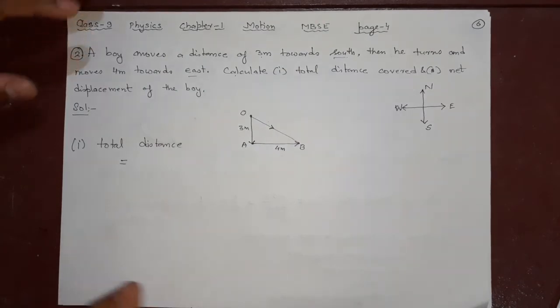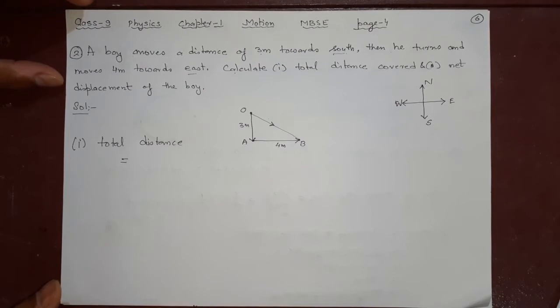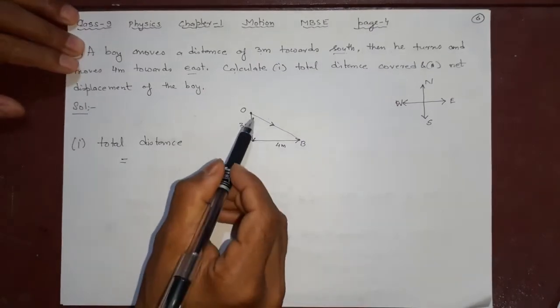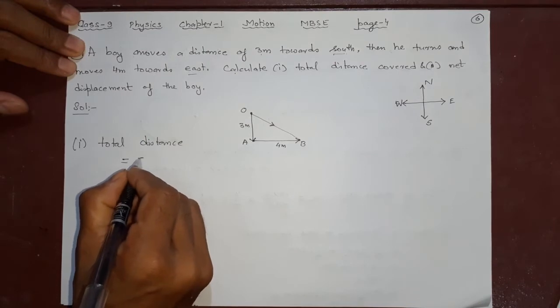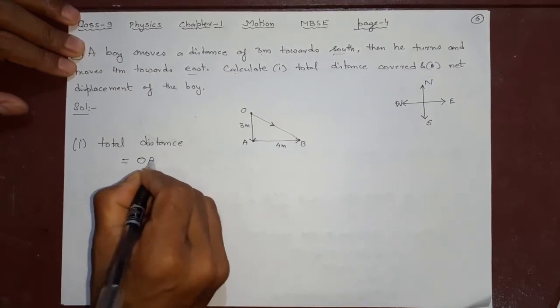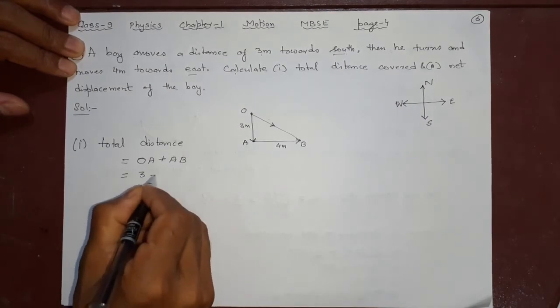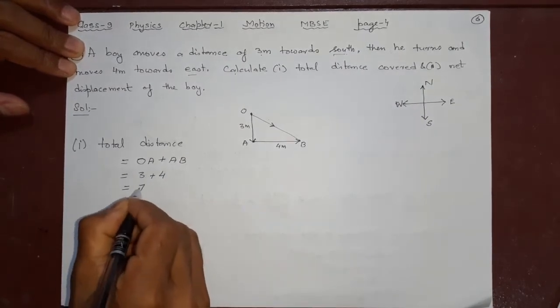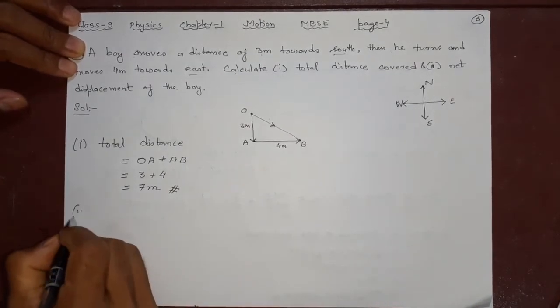How much original length it has covered? 3 plus 4. So this is O to A and from A to B. So what is the whole thing? 3 plus 4 equal to 7 meter, finish. This is your distance. Now what about displacement?